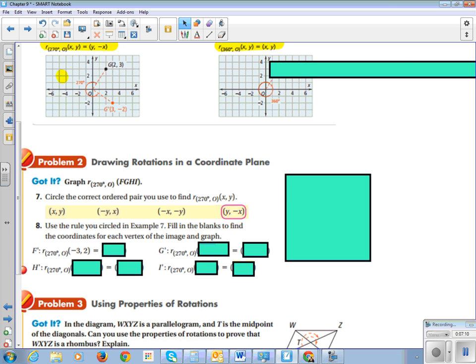So we're going to use that rule on each of our points, our coordinates, to find the new coordinate, the image of it.